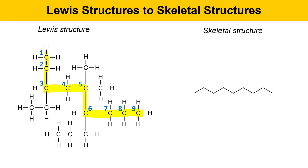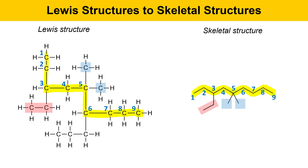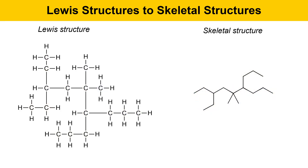To represent this molecule as a skeletal structure, we'll draw a nine-carbon zigzagging chain to represent the main chain. To complete the skeletal structure, we look at the substituents attached to the longest carbon chain. At the number 3 position, there's a CH2CH3 group, so we draw a two-carbon group at the 3 position. At the number 5 position there are two CH3 groups, meaning two lines come off the number 5 position. Finally, at the number 6 position there's a three-carbon linear chain, so we place a three-carbon linear chain there. This completes the skeletal structure.